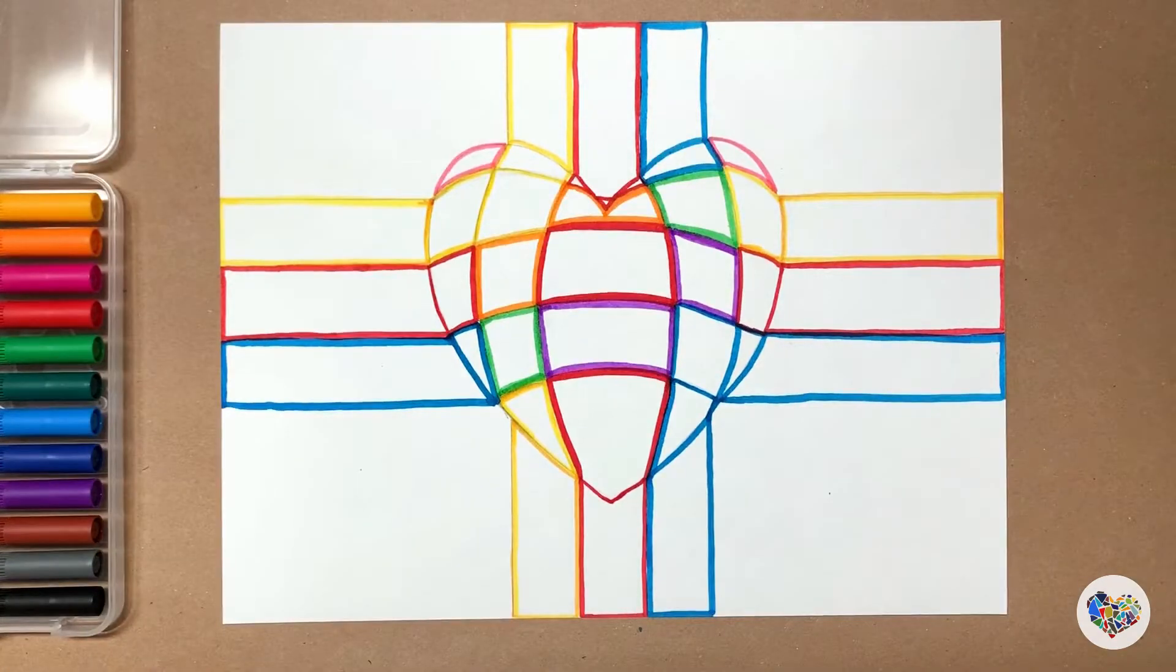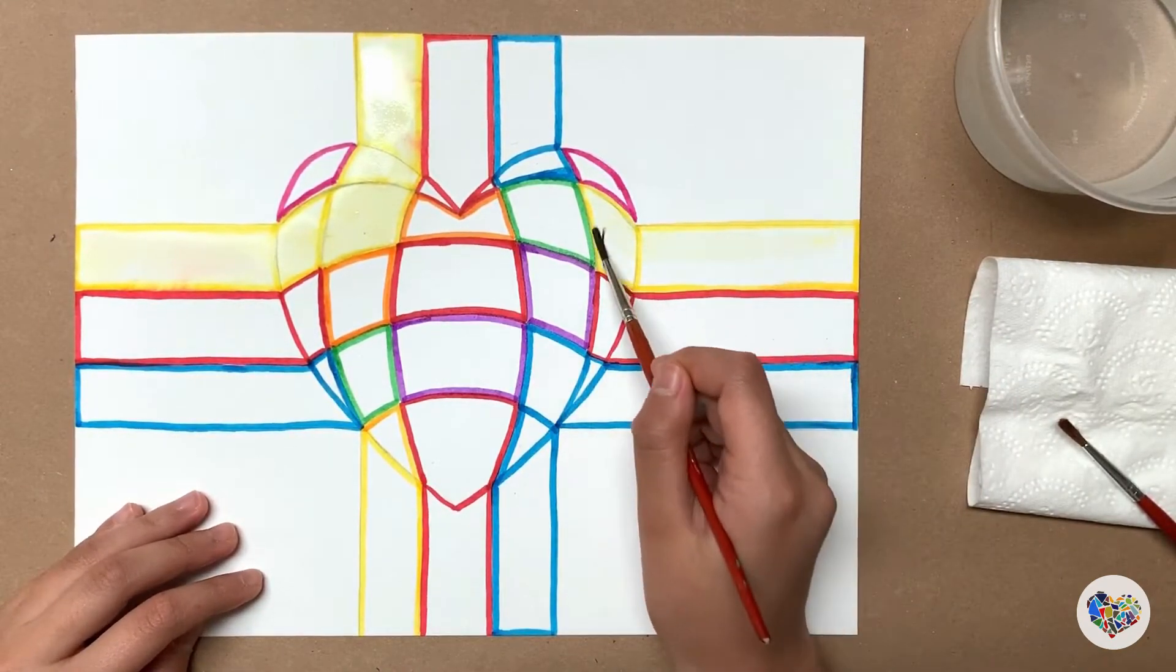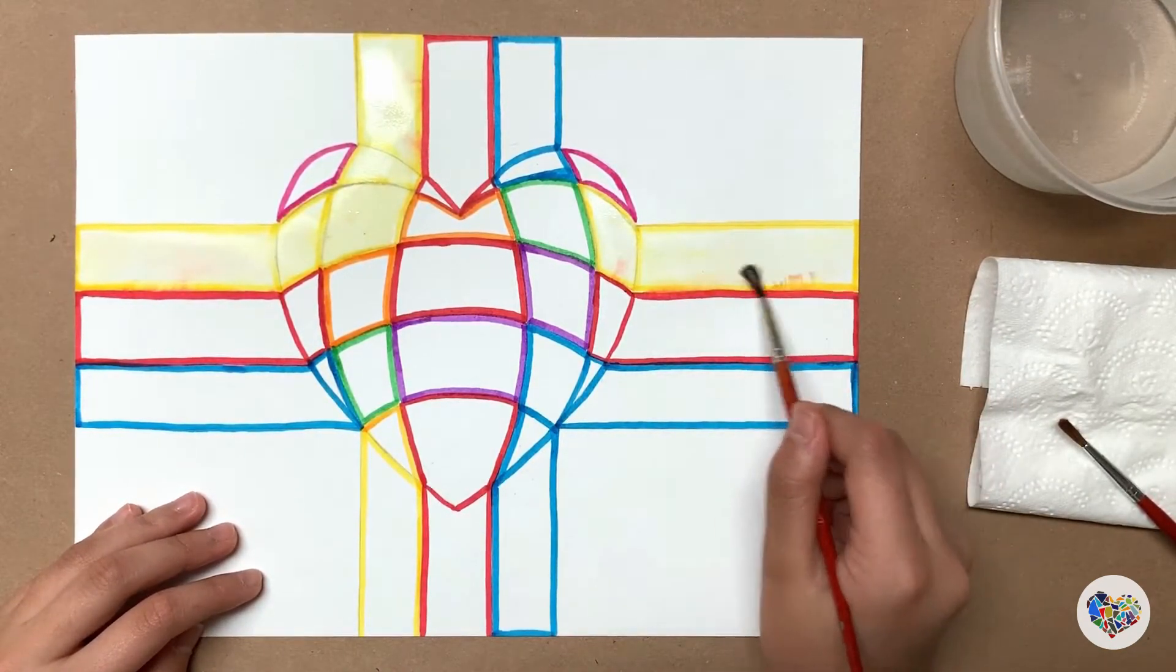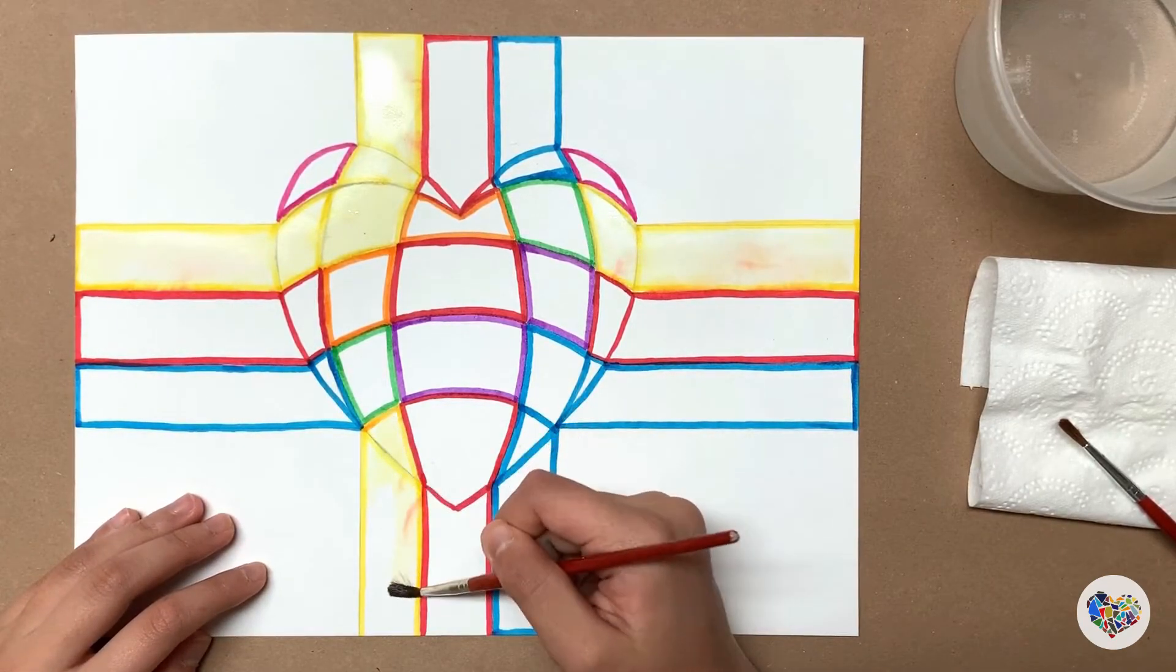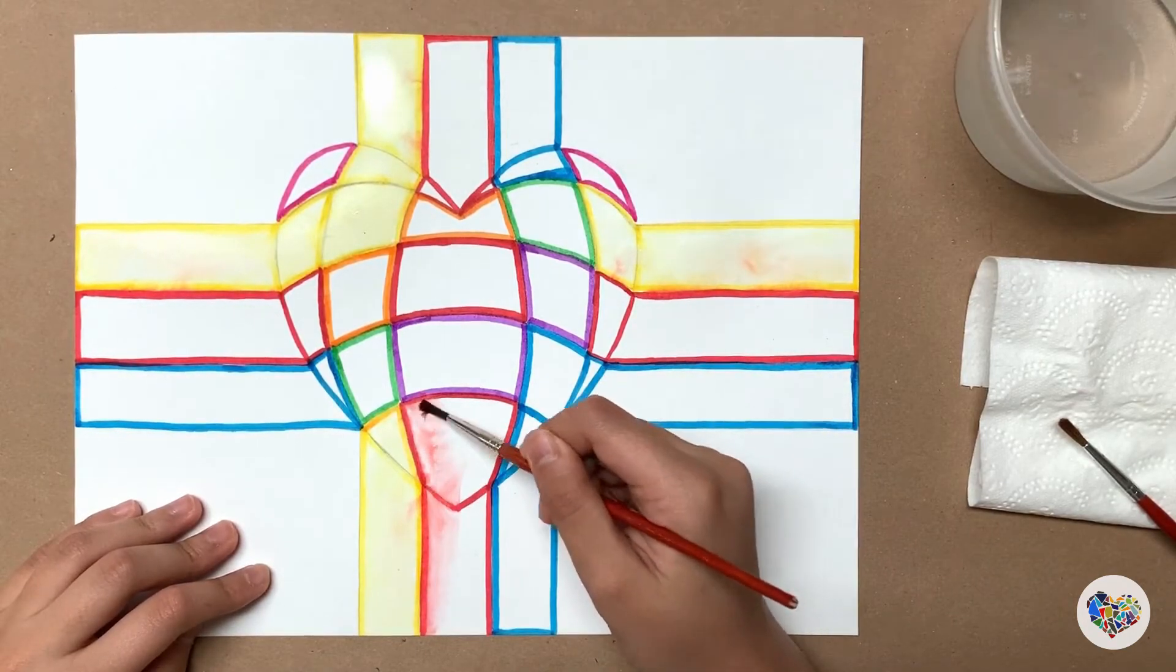Now let's carefully paint water inside of the shapes one by one. Actually, you can fill it with crayons, colored pencils, or watercolors. But I want to paint water on the washable markers to create a watercolor effect.